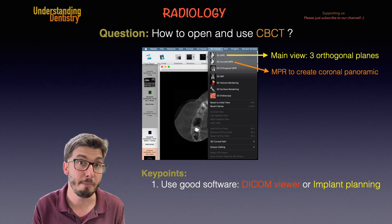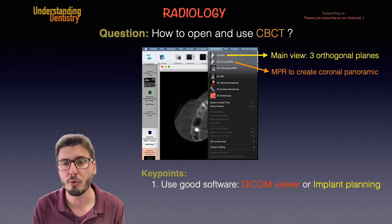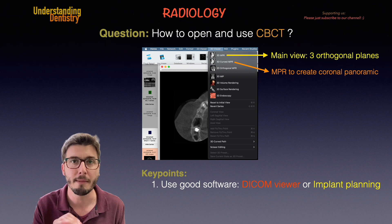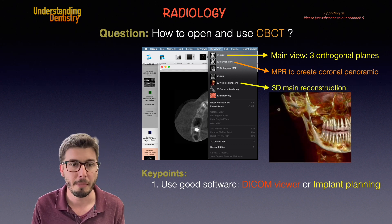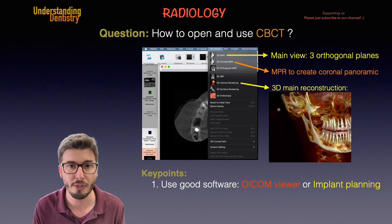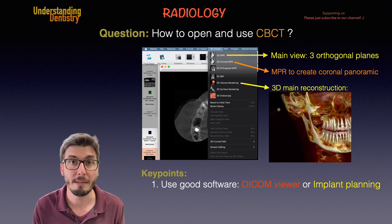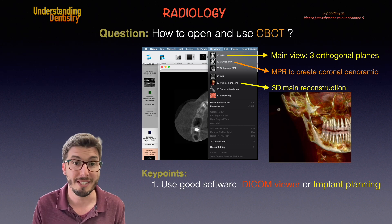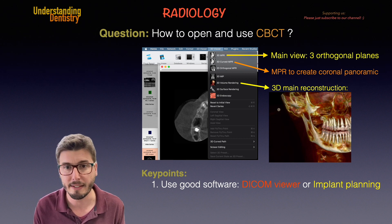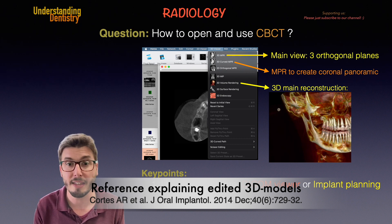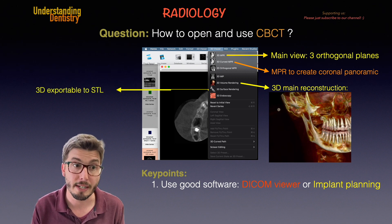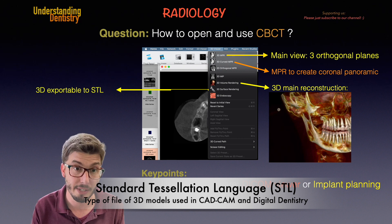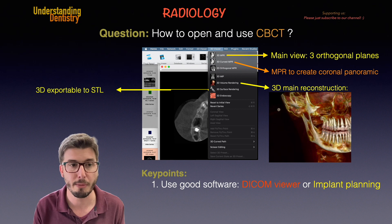Then we have the curved MPR — the curved multiplanar reconstruction — which is used to create the coronal panoramic view by putting points on the axial slice to shape the panoramic view we want to make. The main option for 3D volume rendering allows us to obtain very nice 3D CBCT reconstructed models. The image you are seeing is a 3D reconstructed model edited with threshold colored edition, which is why you can see the teeth and the root inside the bone. Another option is the 3D surface rendering, which allows for exporting files to the STL format.